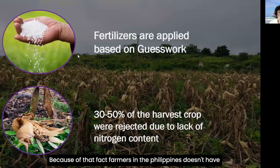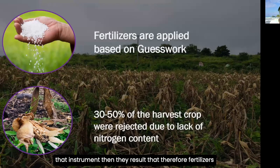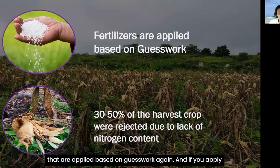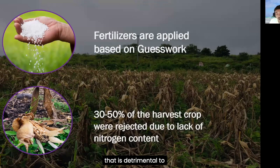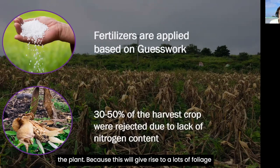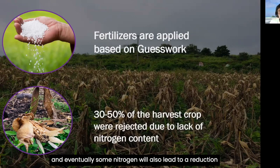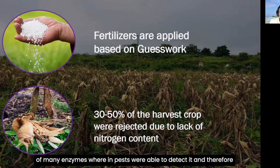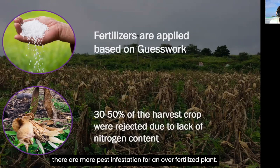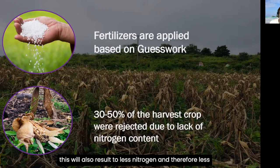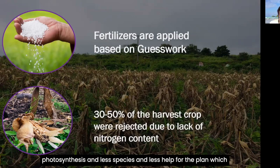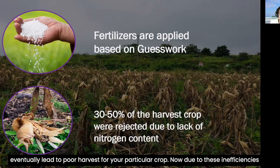Because farmers in the Philippines lack these instruments, they resort to fertilizer application based on guesswork. If guesswork is applied, 30 to 50% of harvested crops are rejected due to insufficient nitrogen content. Over-fertilizing leads to excessive foliage and enzyme production that attracts pest infestation. Conversely, under-fertilizing results in less nitrogen, less photosynthesis, less tissue, and less plant health, eventually leading to poor harvest.